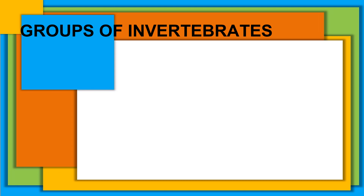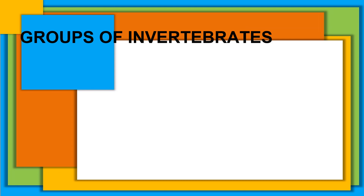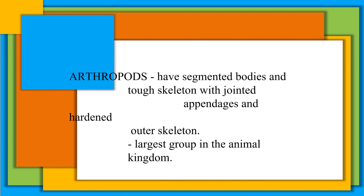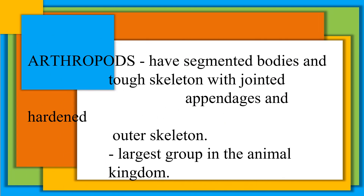Invertebrates have groups. The first one are arthropods. Arthropods have segmented bodies and a top skeleton with jointed appendages and hardened outer skeleton. It is the largest group in the animal kingdom.